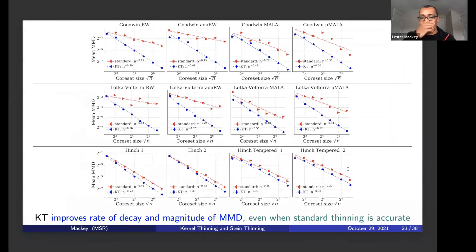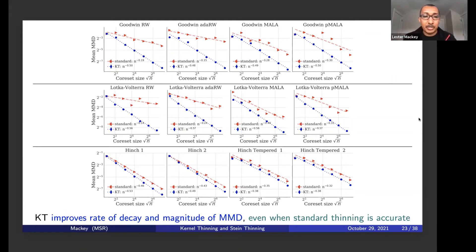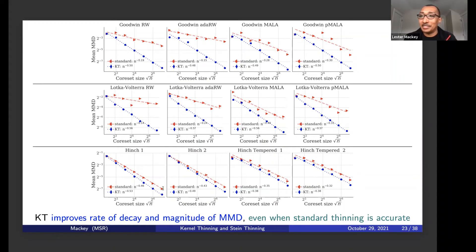Here are the MMD results. For the Goodwin and Lotka-Volterra models, across four different Markov chains each, we see that KT is improving the rate of decay and the magnitude of the MMD. Standard thinning is quite bad in those cases, as expected. For the Hinch model, standard thinning is actually pretty good — showing better-than-IID rates of decay — but even in those cases, we're still improving the approximation quality, which translates into reducing the required dataset size. For example, moving from standard thinning to KT represents a factor of two reduction in dataset size for the same quality — which matters greatly when every point counts for a thousand CPU hours.